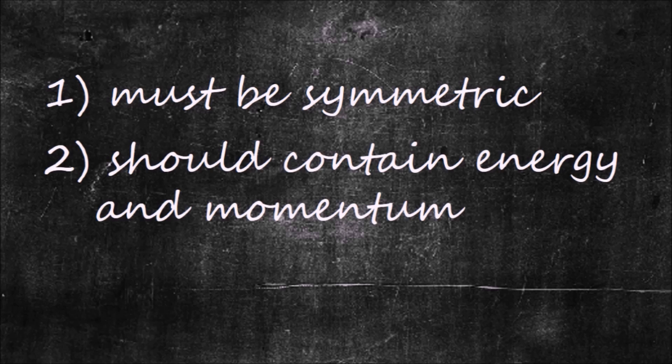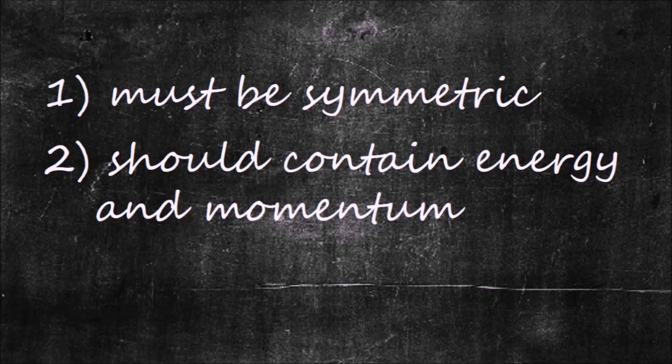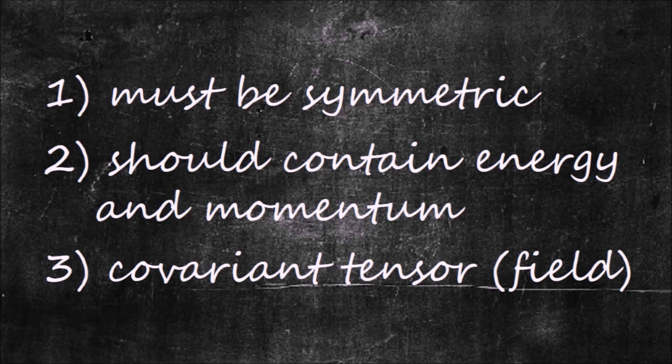First, it must be symmetric. Second, it should contain at least energy and momentum. And third, it must be covariant, and let's not forget that it's a field. To make things as easy as possible, let's construct our tensor in flat spacetime using Cartesian coordinates.